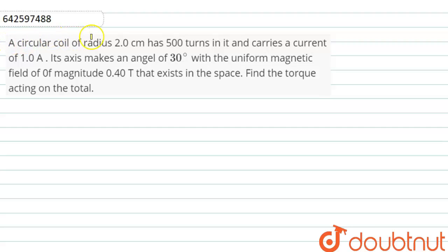The question is: A circular coil of radius 2 cm has 500 turns in it and carries a current of 1 ampere. Its axis makes an angle of 30 degrees with the uniform magnetic field of magnitude 0.40 tesla that exists in the space. Find the torque acting on the coil.